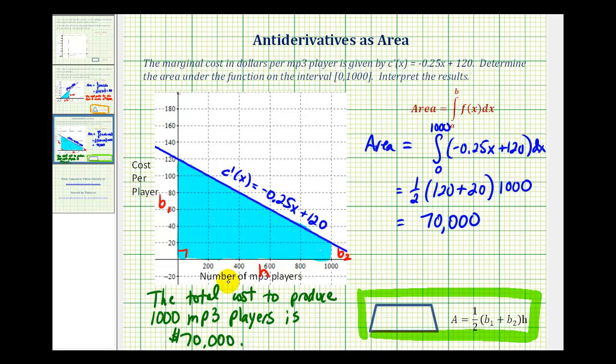Notice how the cost per MP3 player ranged from $120 each to $20 each. But the cost of producing all 1,000 MP3 players is $70,000.